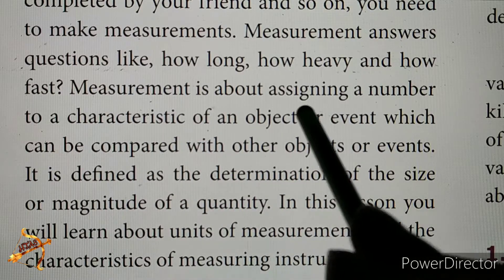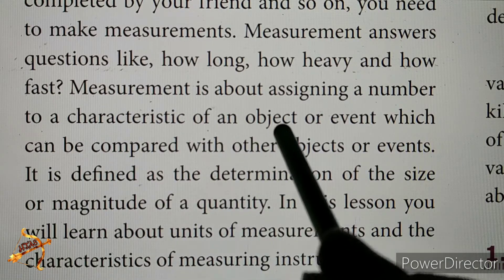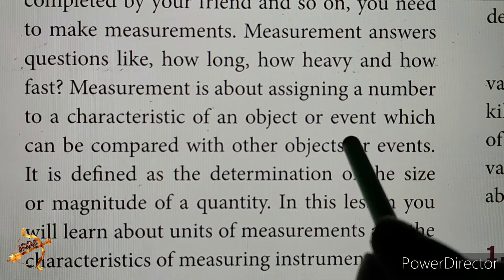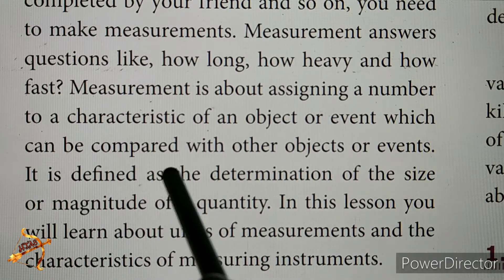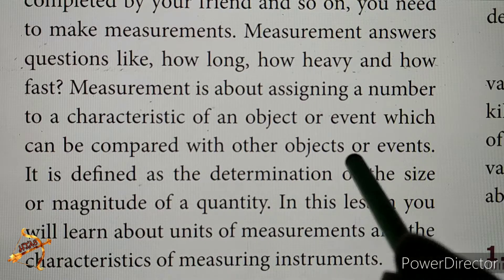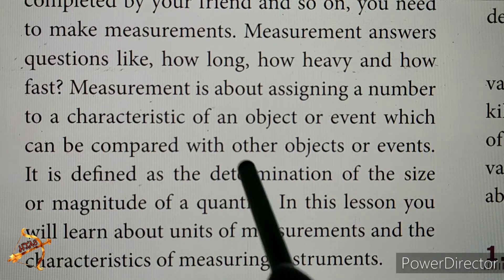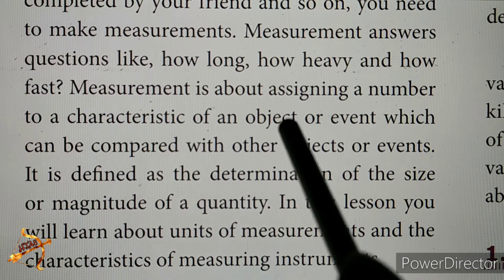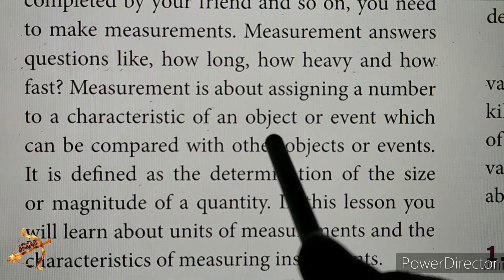Measurement is about assigning a number to a characteristic of an object or event, which can be compared with other objects or events. So measurement is very simple.